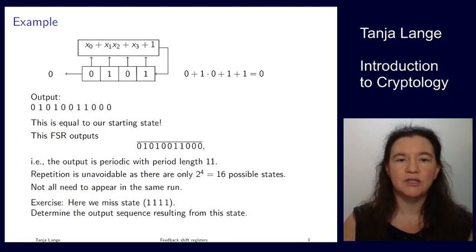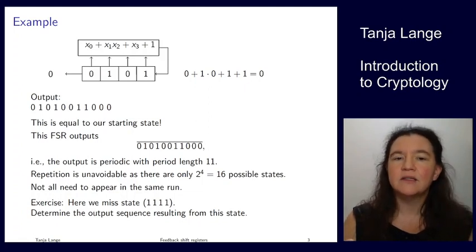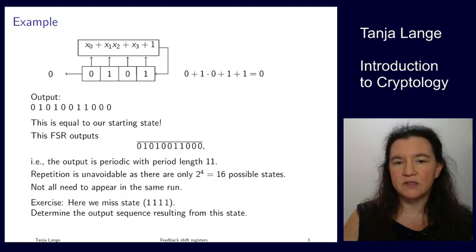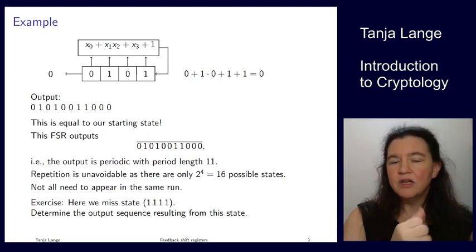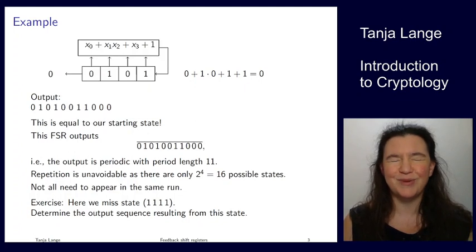So one of the ones which is missing is a state which is 1, 1, 1, 1. And if you want to solve some exercise, do figure out what are the updates of this sequence and what is the output when you start with 1s. You know something about the beginning of this.